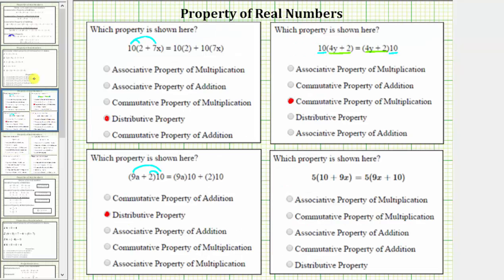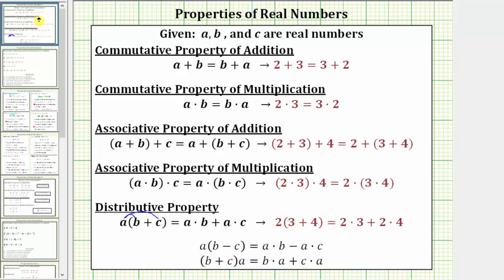And now for the last example. We have 5 times the quantity 10 plus 9x equals 5 times the quantity 9x plus 10. Notice on both sides of the equation we still have a product, but if we focus on the sum inside the parentheses: on the left side we have 10 plus 9x, and on the right we have 9x plus 10. The order of the sum has changed, which is the commutative property of addition. More formally, this is expressed as a plus b equals b plus a.